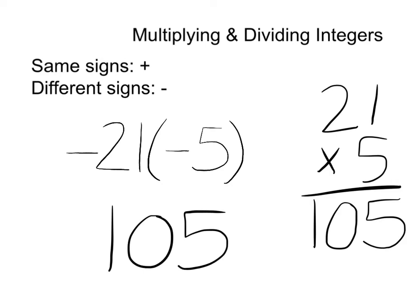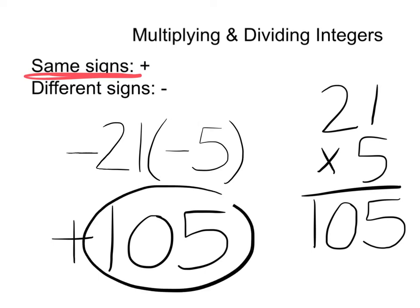Now we need to look at the signs. 21 is negative and so is 5. We have the same sign, so because we have the same sign, the answer is going to be positive. So the answer is positive 105 or just 105.